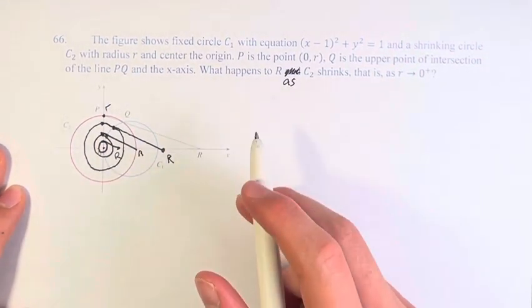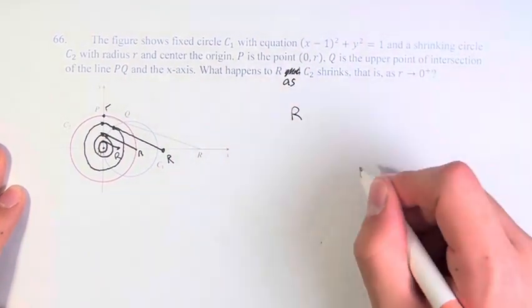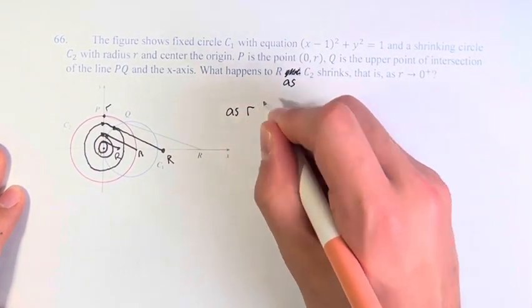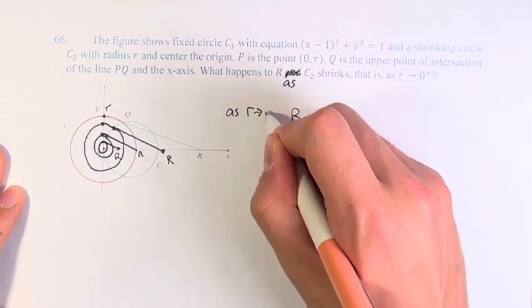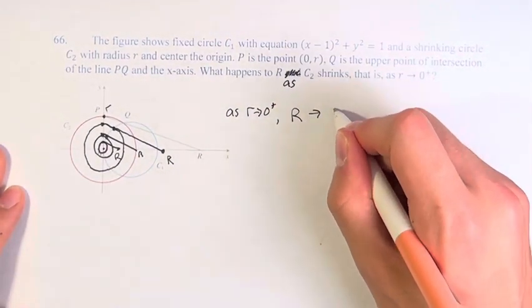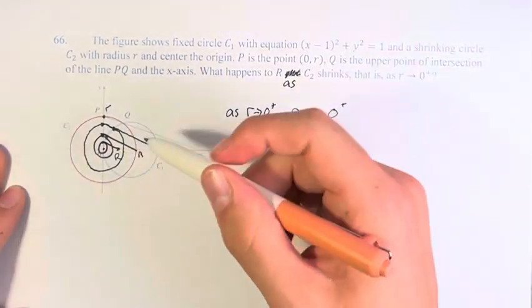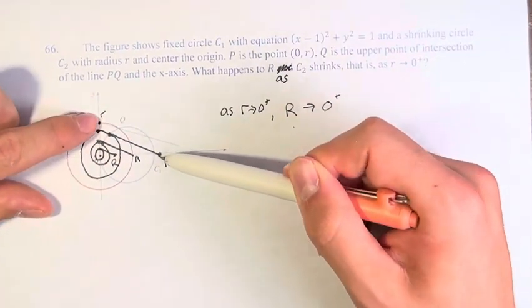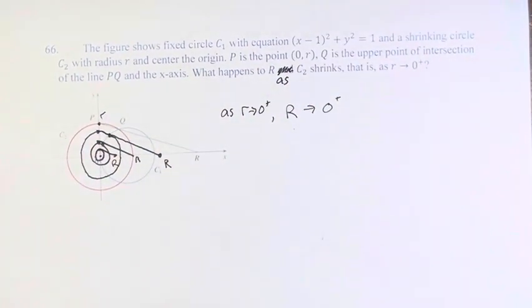Therefore, this value of r, this x value, so as little r, this value goes to zero, R also approaches zero. And they're both coming at it in a positive quadrant. These are both positive values as we approach. Therefore, it's also from the right.